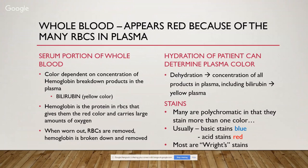Whole blood appears red because of the many red blood cells in the plasma. The color of the serum portion is dependent on the concentration of hemoglobin breakdown products in the plasma. Normally hemoglobin is contained within the red blood cells and very little is in the plasma. The more red blood cells that are broken apart, the more hemoglobin is released, and the more yellow color or bilirubin you will get in the serum. Hydration of the patient can also determine plasma color — if they're dehydrated, the concentration of all products in the plasma, including bilirubin, increases relative to the fluid, giving you a yellow plasma.